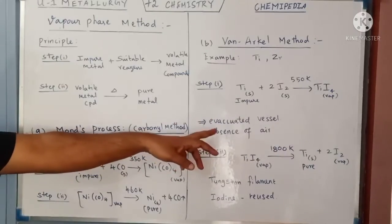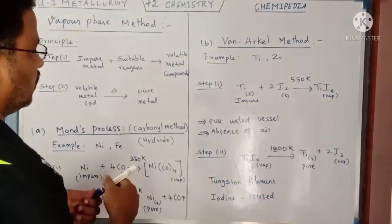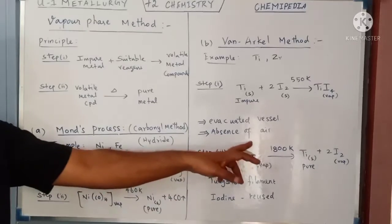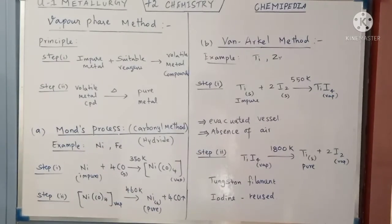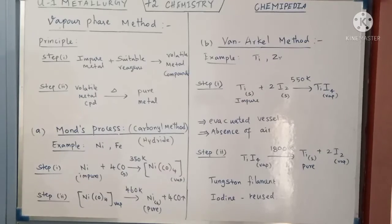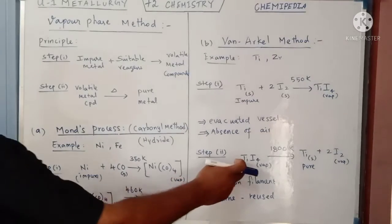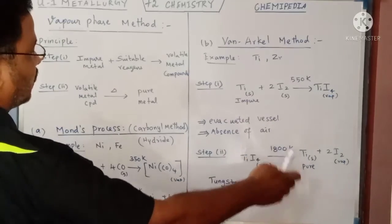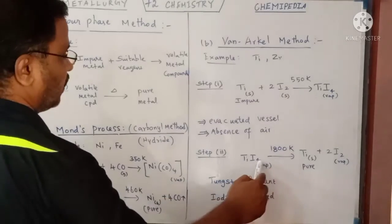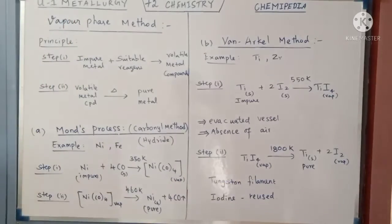This process is carried out in an evacuated vessel — in the absence of air — to avoid formation of metal oxide. After the first step, the volatile titanium tetraiodide is separated from the non-volatile impurities. Next, that volatile metal iodide is heated at a high temperature of about 1800 Kelvin, where it undergoes thermal decomposition, giving pure titanium, while iodine is released as iodine vapors.